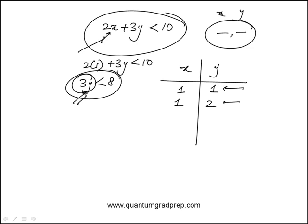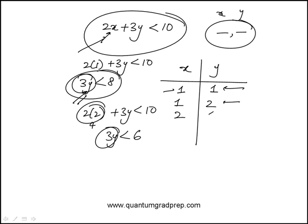So I have two pairs, and then I select the next higher value of x, which is 2. That's 4. We get 3y is less than 6. So here, y can only be 1 because if it's 2, it would be 6, which is not less than 6.